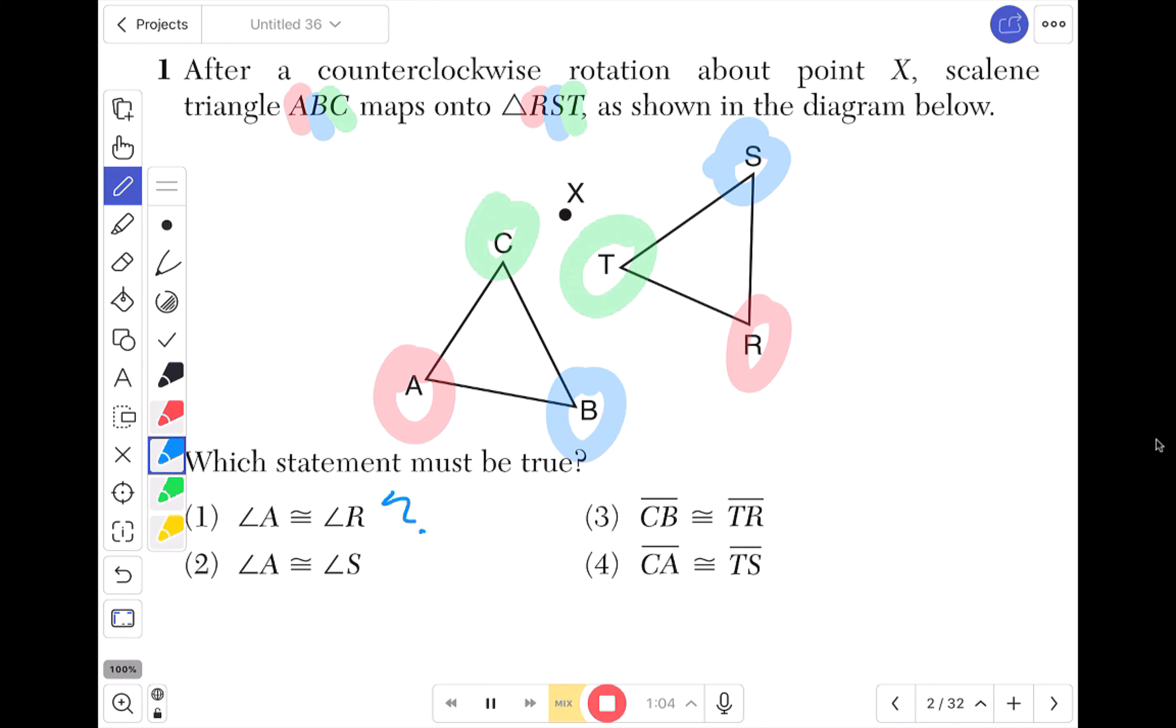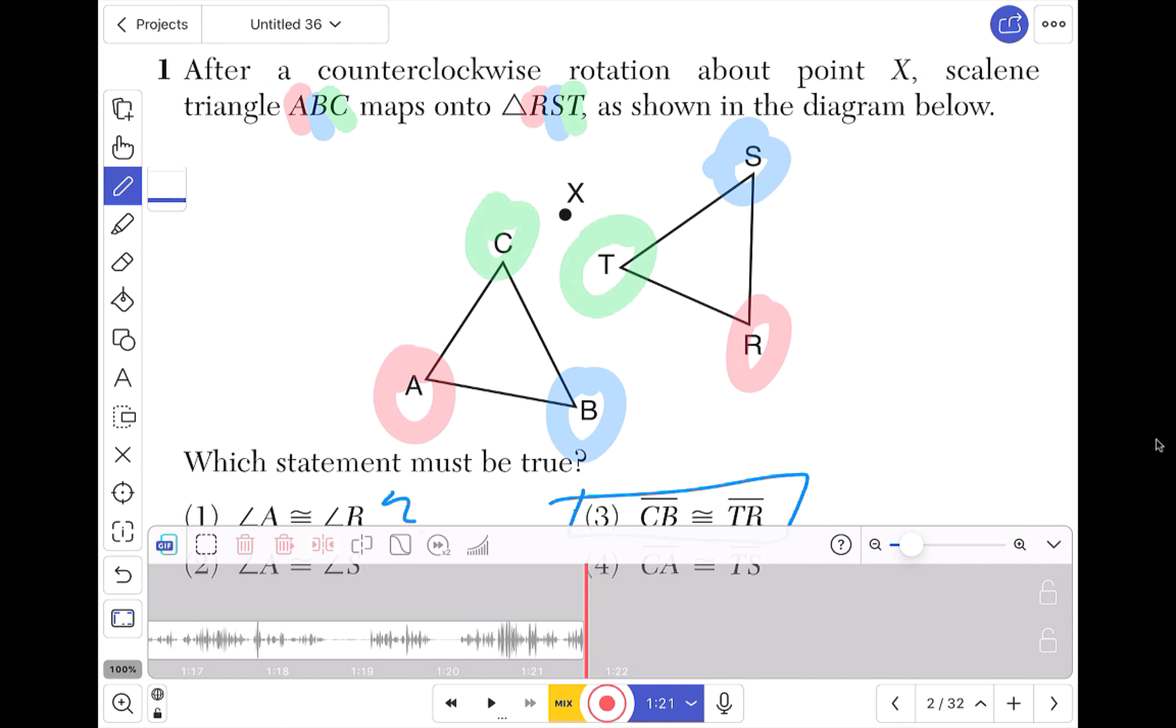Then I would go through and I would say which statement must be true. If we look at option number one it says angle A is congruent to angle R. You know, they're both red and they both are in the first spot in this specific triangle sequence, so that makes sense to me. So I would maybe put like a little question mark right there. If we're looking at option three, let's say hypothetically I made a mistake and let's say I said oh it is option three, CB is congruent to TR, which doesn't make sense.